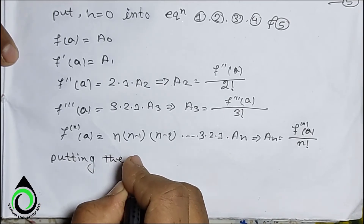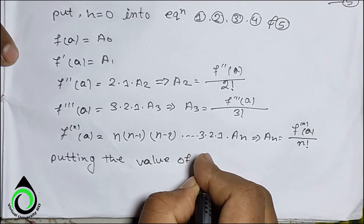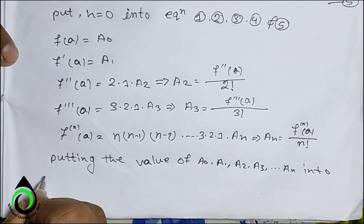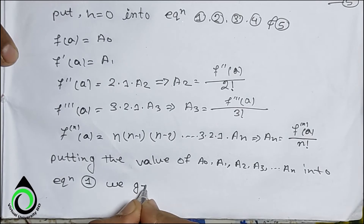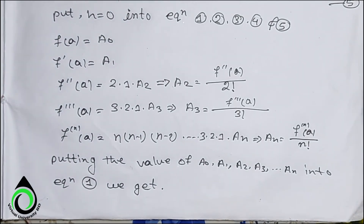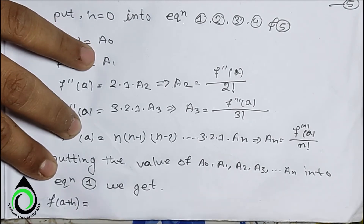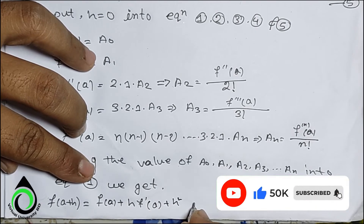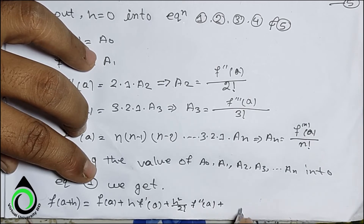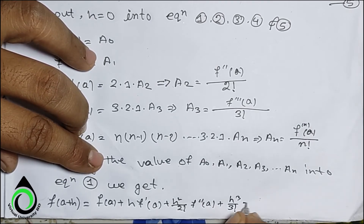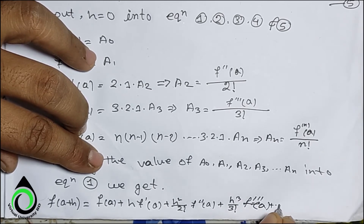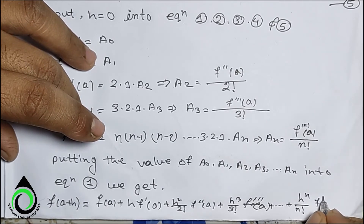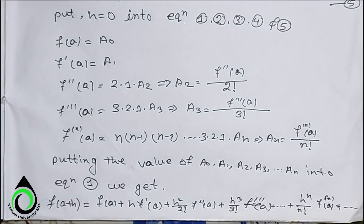Putting the values of a₀, a₁, a₂, a₃, ..., aₙ into equation (1), we get the result: f(a+h) = f(a) + h·f'(a) + (h²/2!)·f''(a) + (h³/3!)·f'''(a) + ... + (hⁿ/n!)·f⁽ⁿ⁾(a) + ... Proof complete.